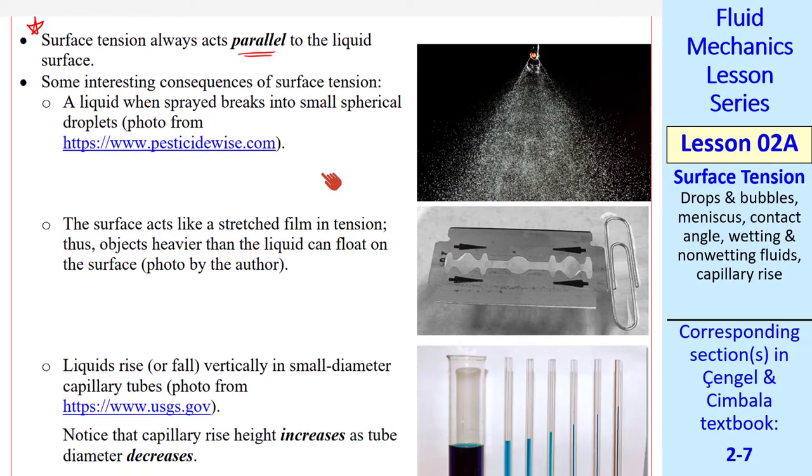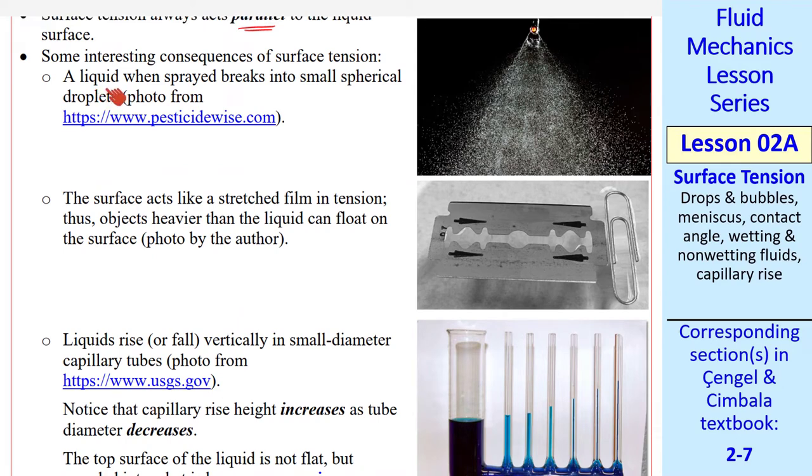There are many interesting consequences of surface tension. The first one we'll mention is that when a liquid is sprayed, it breaks into small spherical droplets, as you can see here. If this is one of those drops, the surface of the drop is under tension, like a balloon. And as we said, the direction of the surface tension is always parallel to the surface. The pressure inside the drop is greater than the pressure outside the drop. Again, think of the skin of a balloon, where the pressure inside is higher than the pressure outside. These drops are spherical, since a sphere represents the smallest surface area for a given volume.